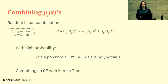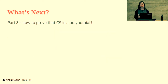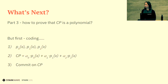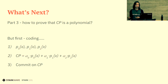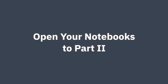Then we are going to commit on CP using a Merkle tree, like you did in the previous part. That finishes the second part of the protocol. In part three, you are going to see how to prove that CP is actually a polynomial. But first, you are going to do some coding: you will code P0, P1, and P2, then create the composition polynomial, and finally commit on it using a Merkle tree.